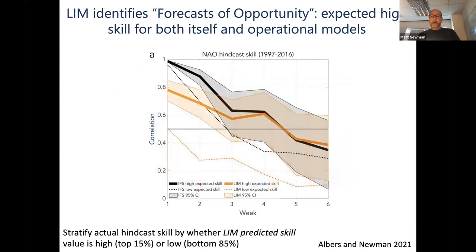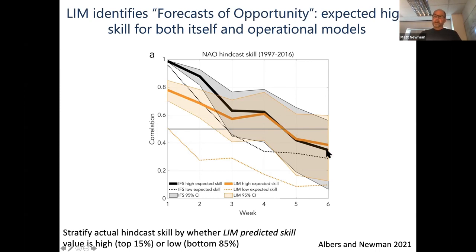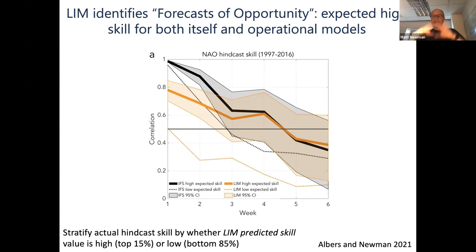That's for the Pacific. This is the NAO. We've captured about the top 15% of cases here. The black line represents the IFS skill for the NAO in the 15% of cases when the LIM is predicting higher skill. The orange is the LIM's own skill in those circumstances. That skill is considerably higher than in all the remaining 85% when the LIM is predicting lower skill. When the LIM is bad, it's awful — part of this has to do with this low-order truncation of the LIM, because we're not representing the entire system, but we're representing the part that's largely predictable, which is all we really care about on these timescales.